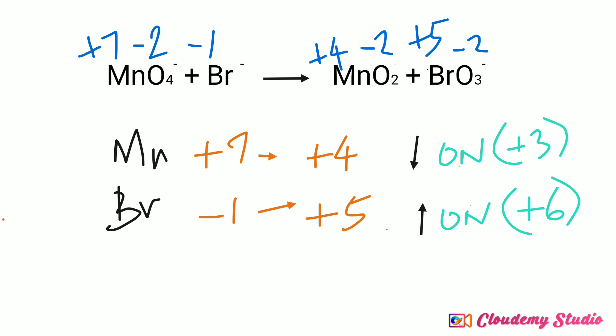Using the decrease and increase in oxidation numbers, we multiply manganese and bromide ion on the right-hand side. Bromide ion is multiplied by 1 time and manganese dioxide by 2 times on the right-hand side. After that, we balance the left-hand side accordingly.